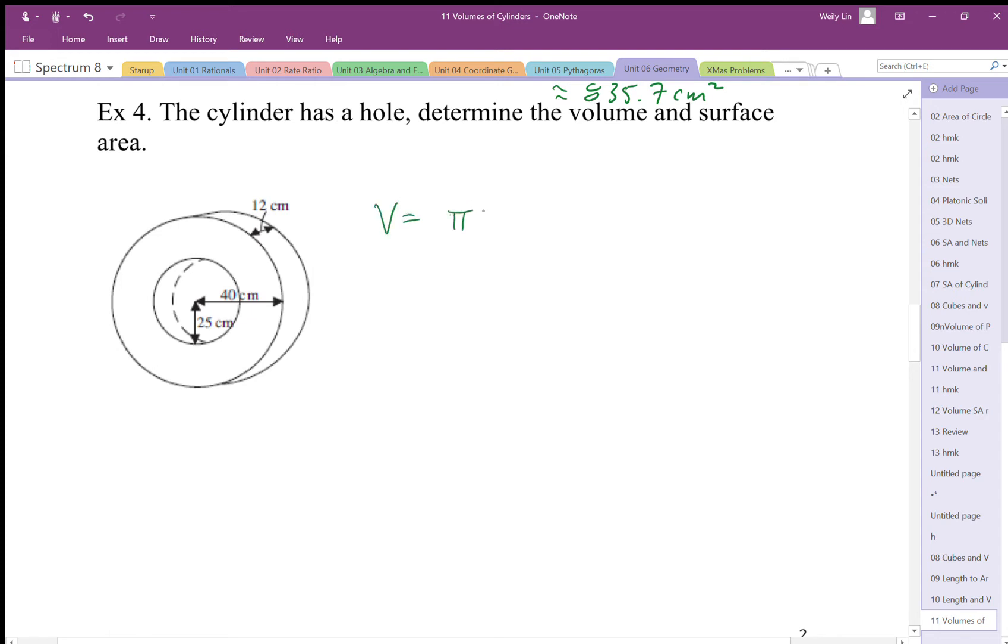The area of the big circle in this case is going to be 40 centimeter radius, so π r squared. We're going to do it slightly differently. I think we're just going to take this side surface area, so we're going to subtract the smaller circle, so π times 25 squared.